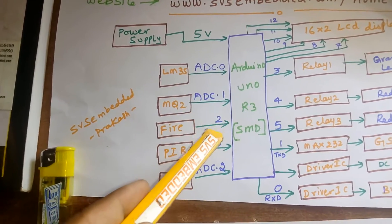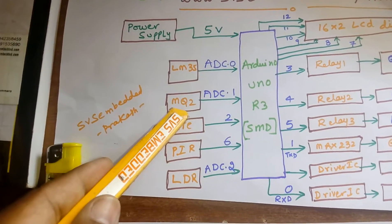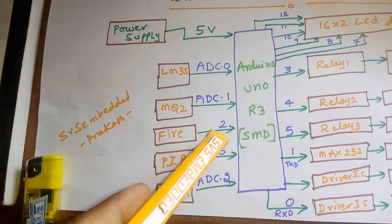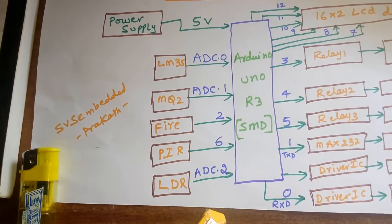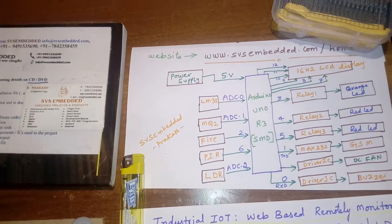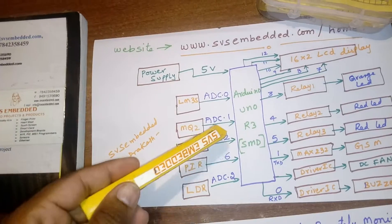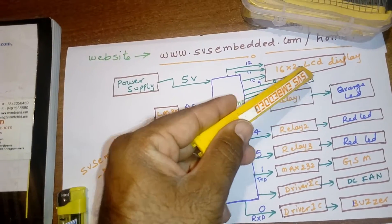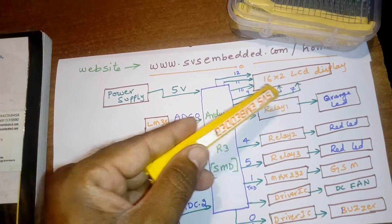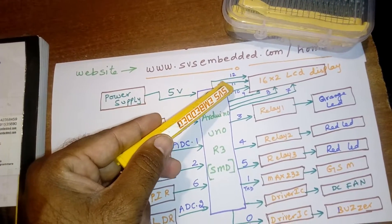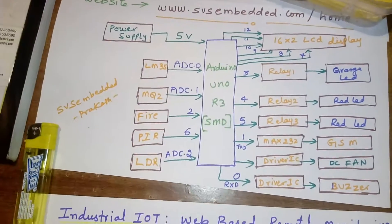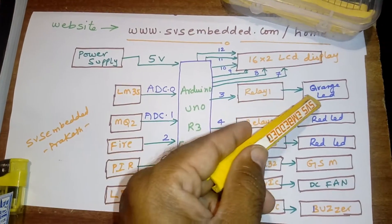ADC1 is connected with the MQ2 sensor. The fire sensor is connected to pin 2, and pin 6 is connected with the PIR and MAX232. The 16x2 LCD display is connected using pins 2, 11, 10, 9, 8, 7 for RS, Enable, D4, D5, D6, D7 in 4-bit mode.